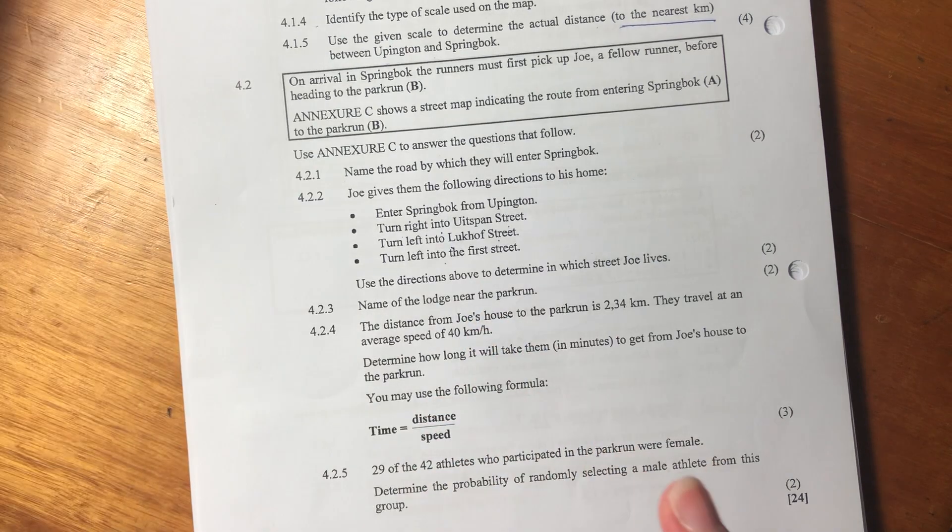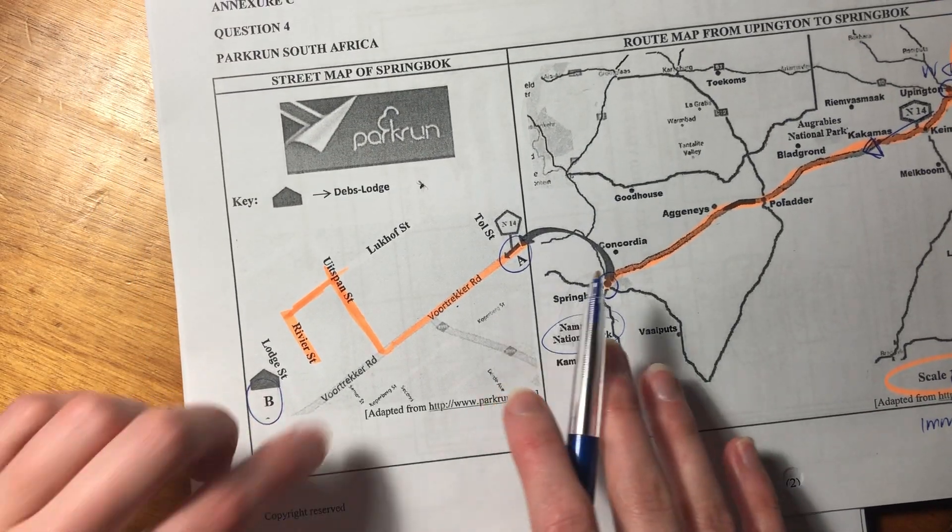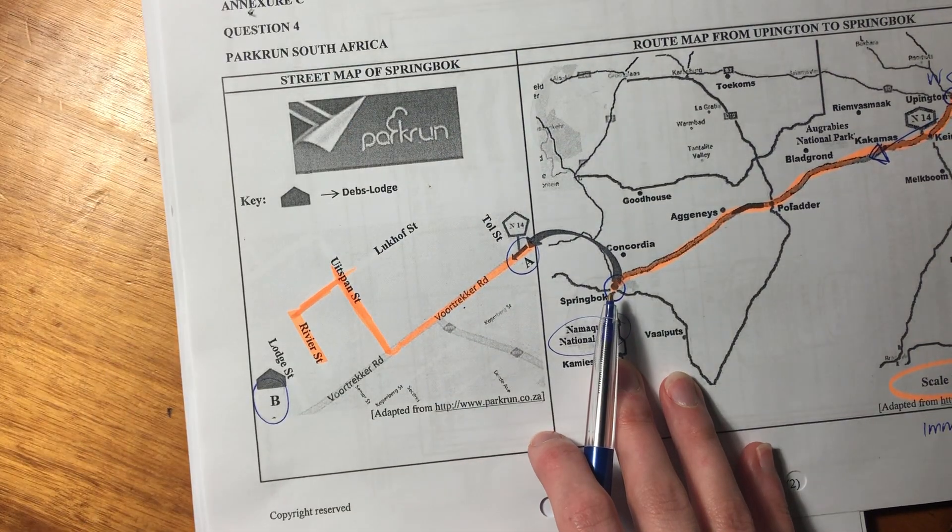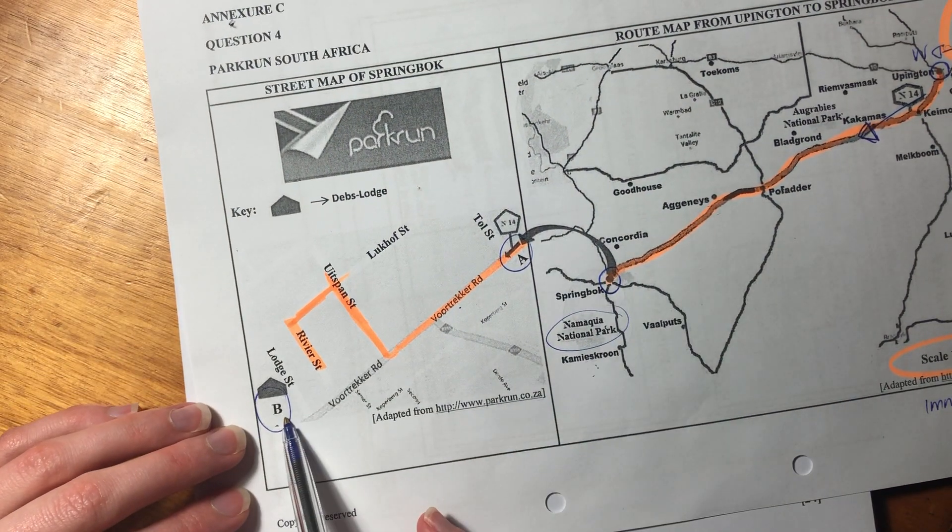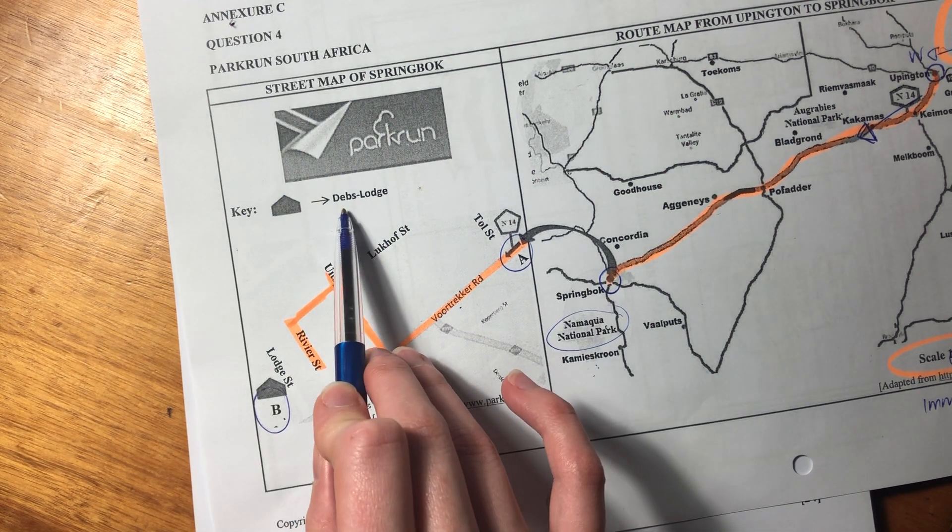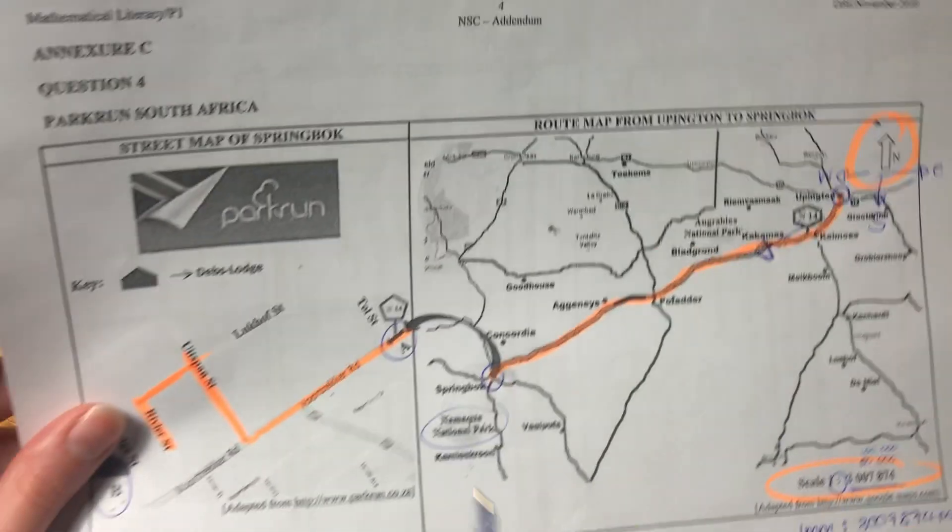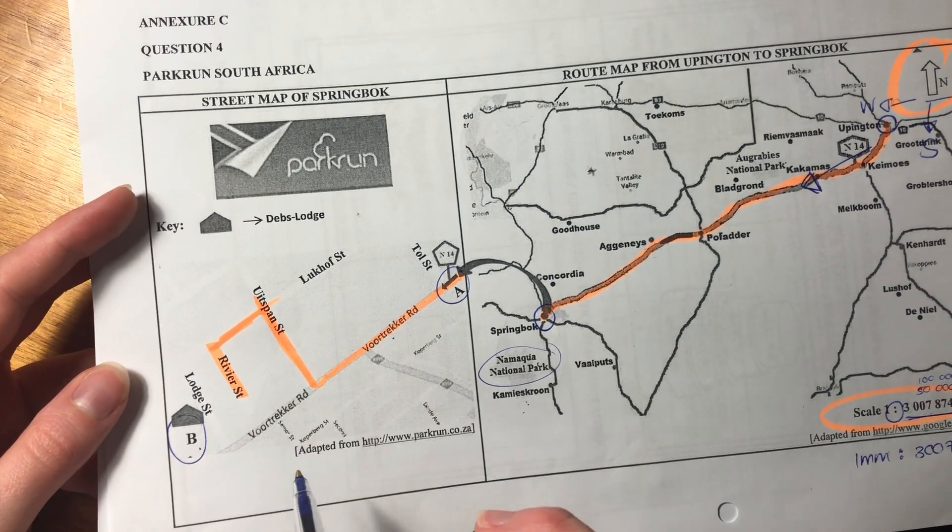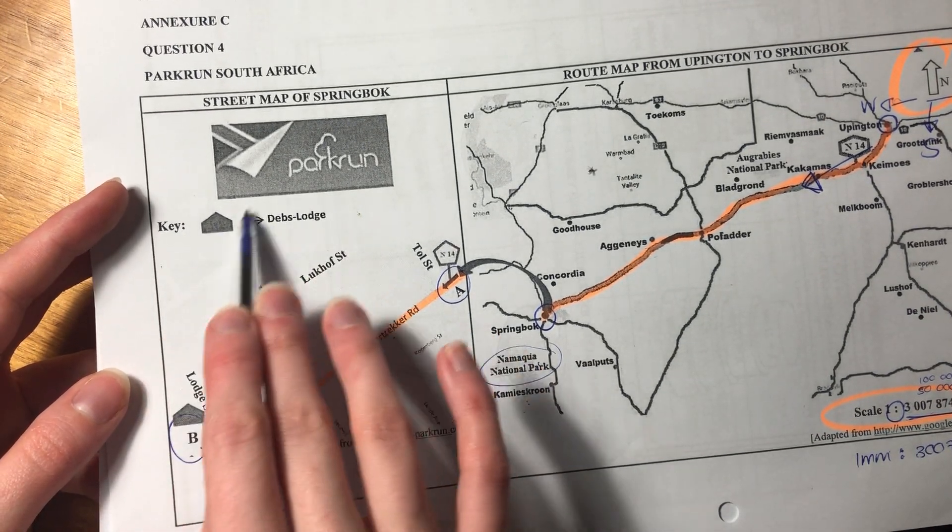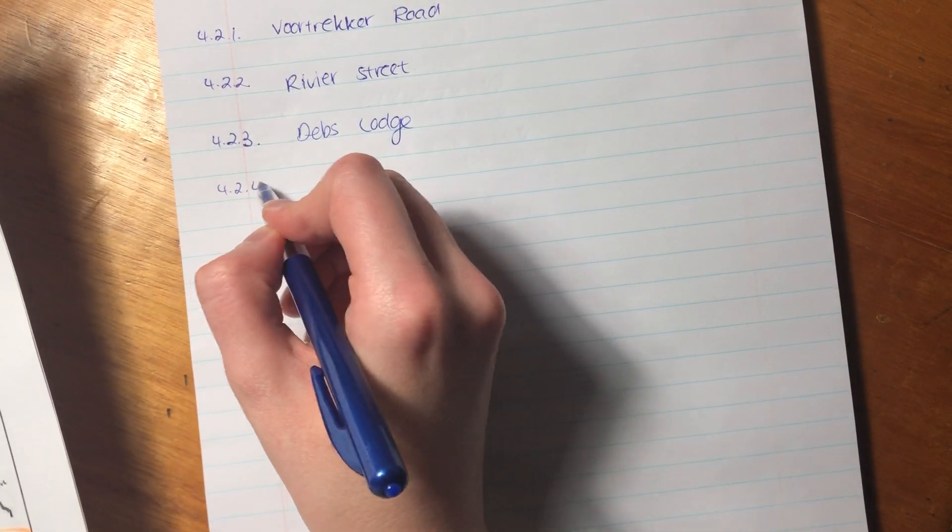Let's go on to the next one. Name the lodge near the parkrun. Okay. Oh, look. There's a bug there. Oh, sorry, fam. Not living your best life. There's B where the parkrun is. And it says that this is a little lodge and it's Deb's Lodge. That's quite an easy question because it's actually the only lodge that is in this picture at all. So you couldn't really get it too wrong. Deb's Lodge. Okay.